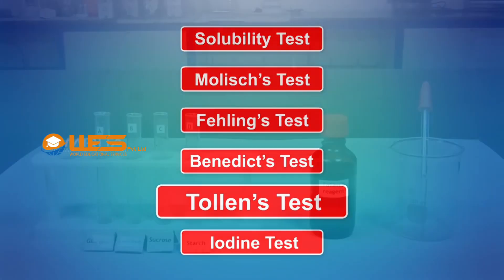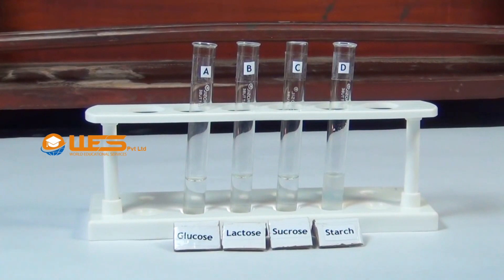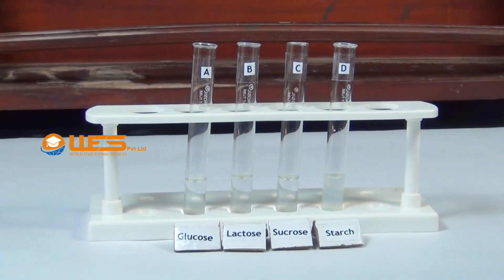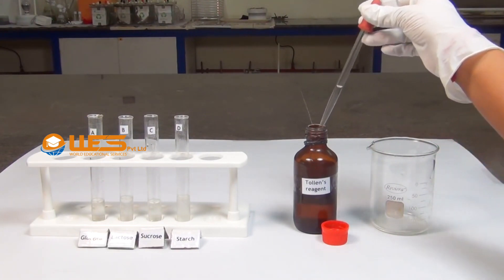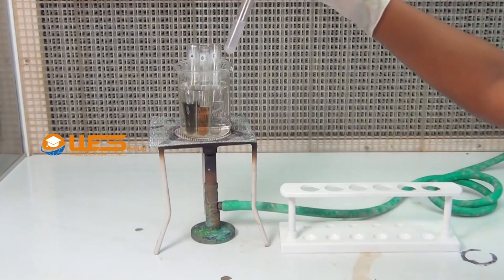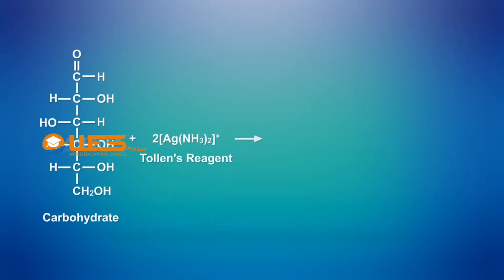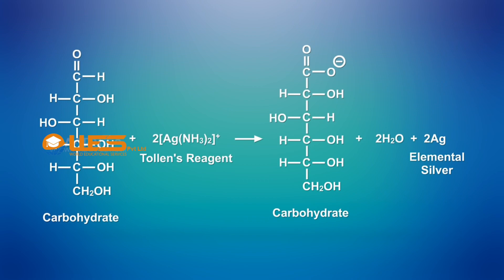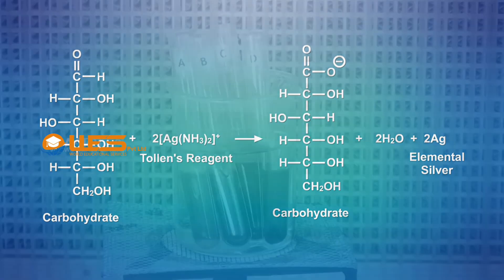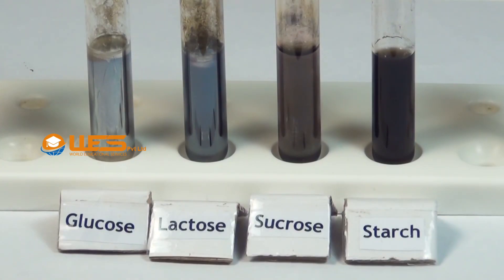Tollens Test. Take a small quantity of aqueous solution of glucose, lactose, sucrose and suspension of starch in four test tubes A, B, C and D respectively. Using a dropper, add a small quantity of Tollens reagent into each test tube. Heat the test tubes in a boiling water bath for some time. The reducing sugars, glucose and lactose, reduce silver ions in the reagent to elemental silver, appearing as a silver mirror on the inner surface of the vessel. No such silver mirror is produced by non-reducing sugars, sucrose and starch.